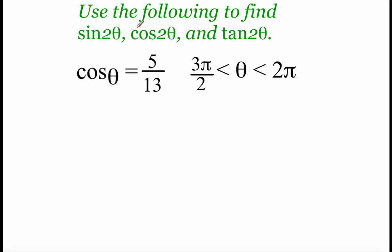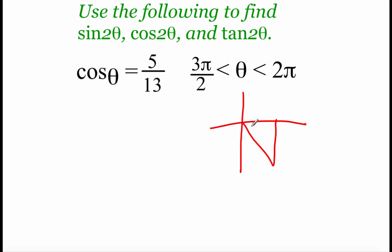The next example is a little different. We're going to find cosine of 2 theta and tangent of 2 theta based on given information. We're told that angle theta is between 3 pi over 2 and 2 pi, which tells us we're looking at the fourth quadrant. We know our cosine value is 5 over 13, giving us the adjacent side and hypotenuse. Using the Pythagorean theorem to find the missing side, we get 12 — but since it's in the fourth quadrant, that's negative 12.